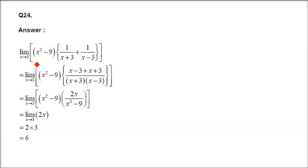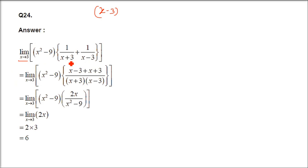The next question is: when x tends to 3, find the limit of (x² - 9) divided by (1/(x+3) + 1/(x-3)). Please remember, whenever we have x tends to 3, that means x minus 3 will always be a factor. If you put x as 3, you will see that this expression is going to be 0 by 0.